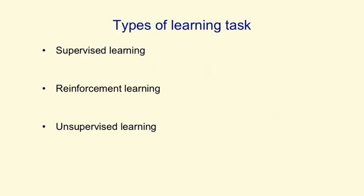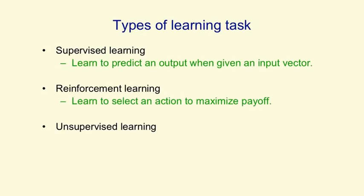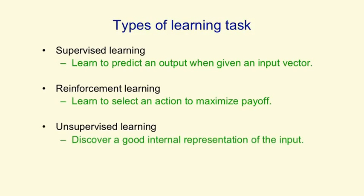Learning can be divided into three broad groups of algorithms. In supervised learning, you're trying to predict an output when given an input vector. In reinforcement learning, you're trying to select actions or sequences of actions to maximise the rewards you get, and the rewards may only occur occasionally. In unsupervised learning, you're trying to discover a good internal representation of the input, and we'll come later to what that might mean.